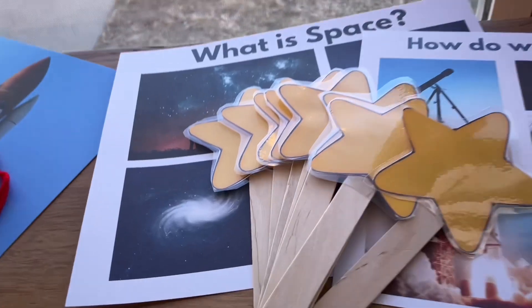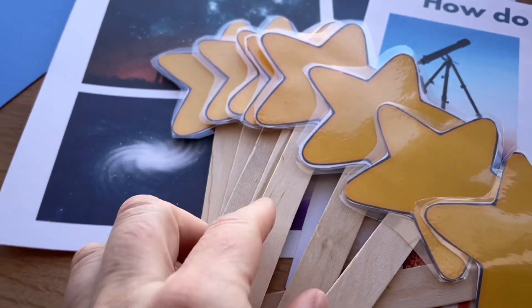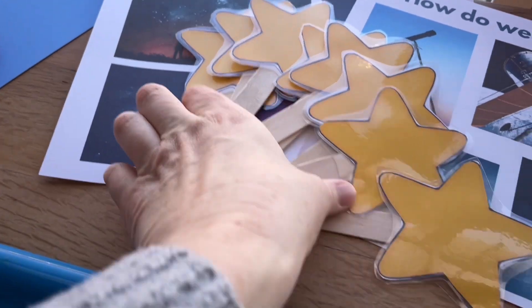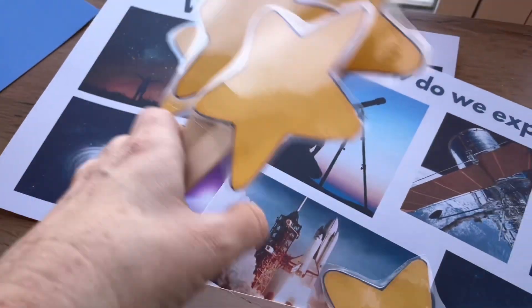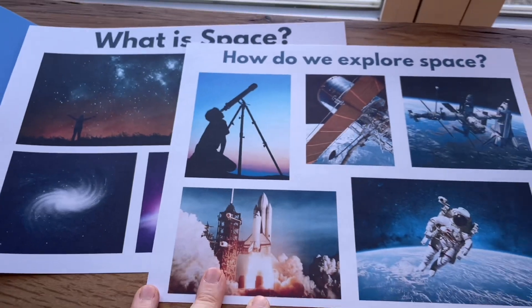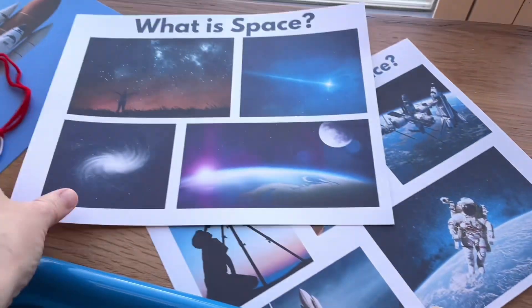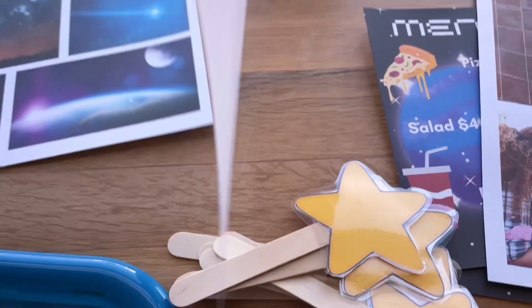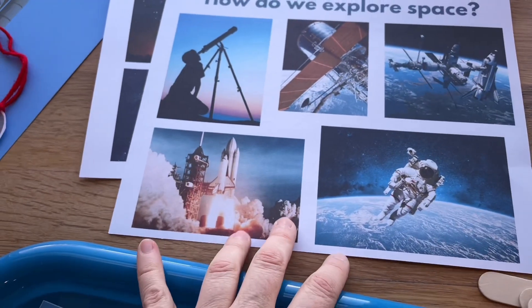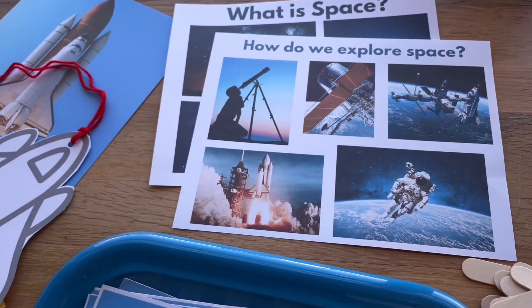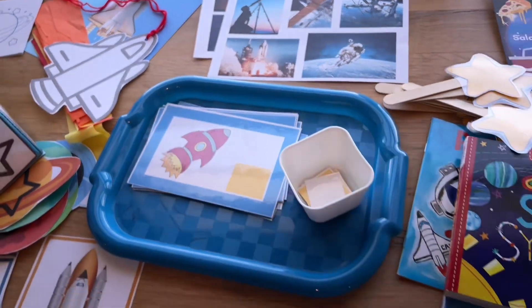For circle time we're going to be singing Twinkle Twinkle Little Star and Mr. Golden Sun, so I have these star props the kids will have fun with. I've also made a couple group time discussion cards: What is Space and How Do We Explore Space. We'll have a lot of questions we can pull those cards out at circle time and have lots of discussion day after day.